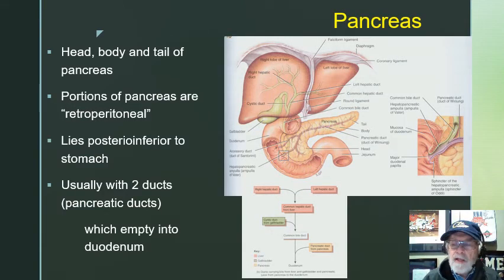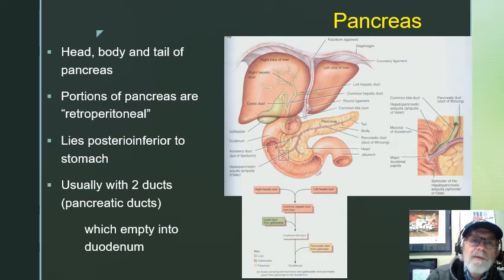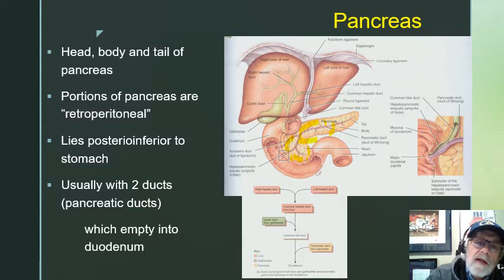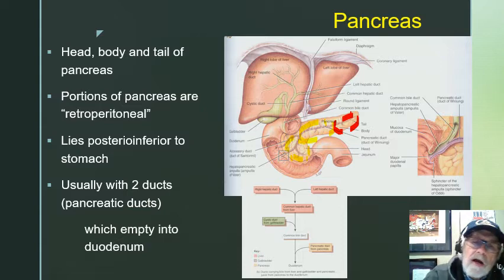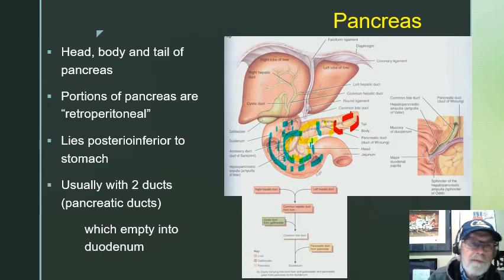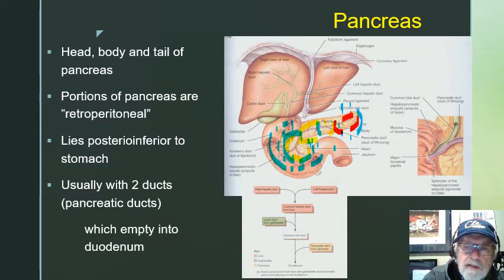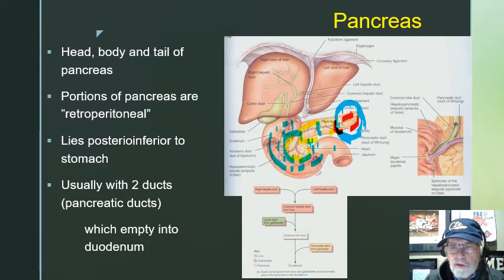Let's first talk about the pancreas. The pancreas is a gland and it has a head, a body, and a tail. Here's the C-loop of the duodenum and how that head of the pancreas and a little bit of the body sits within that C-loop. The duodenum as well as the pancreas are all retroperitoneal, which means they're covered over by the peritoneum and held to the backside of the abdominal wall.